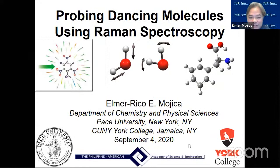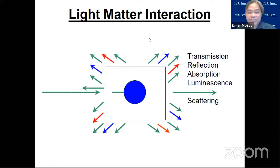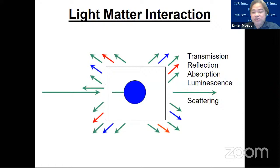When light interacts with matter, there are several processes that happen. Usually there is transmission — the passage of light through the material without loss of energy. There is reflection, which is the change in light direction at a fixed angle. There's absorption, which is the transfer of light radiation to energy within material. Luminescence is the emission of light by a substance that has not been heated, like fluorescence and phosphorescence. And then there is scattering, where there is a change in the light direction.